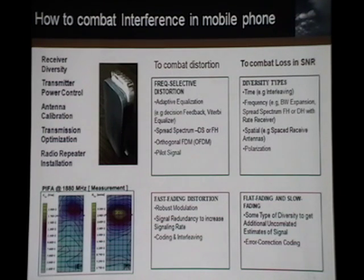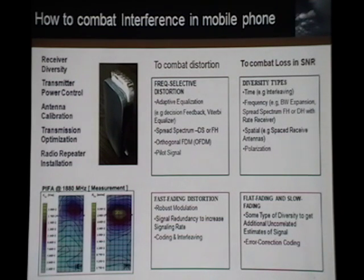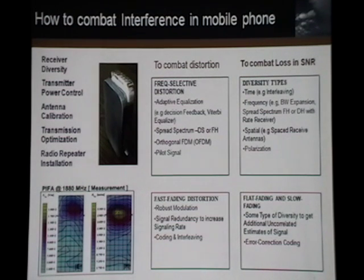What's the solution? Normally we use receiver diversity, but the handphone is too small, so diversity is very limited. We need to adjust transmitter power, especially when you're close to or far from the base station. We also need antenna calibration, which is very important. We need transmission optimization and radio repeater installation. Sometimes the signal is too weak — not related to handset design but to the service operator. For example, AT&T signal is weaker than Verizon's. Whatever technology you use for the handset, the signal may still be weak, so you use repeaters, which are cheaper and easier to install.